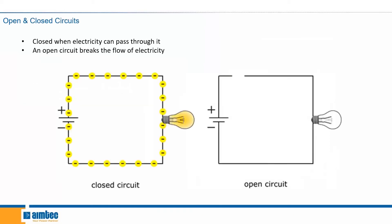Now moving on to a basic concept of circuits: you can either have an open circuit or a closed circuit. A closed circuit is one that will allow electricity to pass through it, and an open circuit will break the flow of electricity. So if you're powering a light bulb and you open the circuit, the electricity won't be able to flow through and your light bulb will not be turned on. A very easy way to conceptualize an open and closed circuit is a light switch — the switch is what will either open or close the circuit.